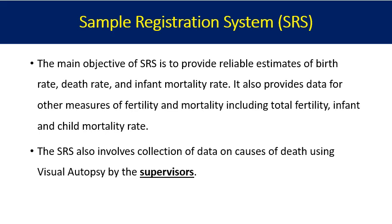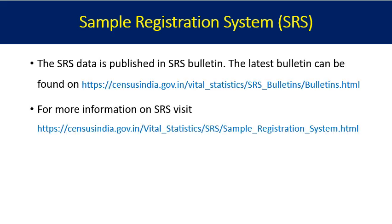One more addition to the sample registration system is that supervisors have been trained to perform a verbal autopsy to identify the cause of deaths. For every death in the sample area, the supervisor not only records the death but also asks household members questions about what caused it. This verbal autopsy allows us to know the cause of death. The latest SRS data and more information about the system are available at the provided links.